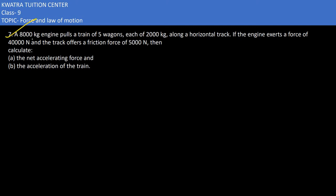Here in the seventh part it says we have an 8000 kg engine pulling a train of five wagons, each of 2000 kg, along a horizontal track. They're saying if the engine exerts a force of 40,000 N and the track offers a friction force of 5000 N, they are asking us to find the net accelerating force.